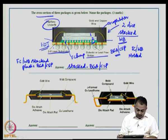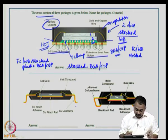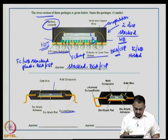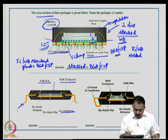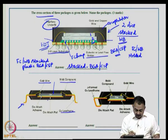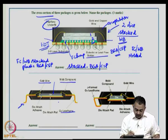The next figure at the bottom left shows a cross-section with copper lead frames. There is a die at the center, a molding compound protecting the die, and a gold wire bond providing the first-level interconnect from die to lead frame. There is also a die attach adhesive that platforms the die on the lead frame die attach pad.